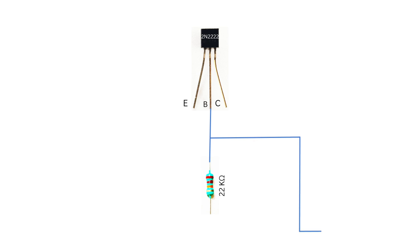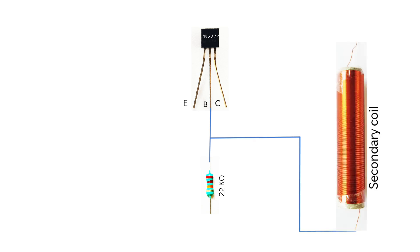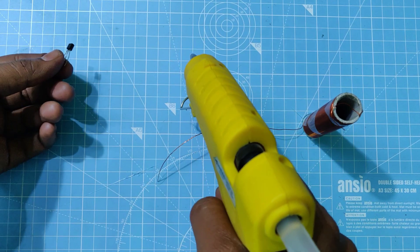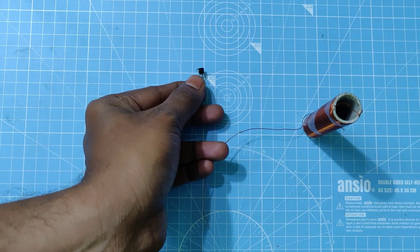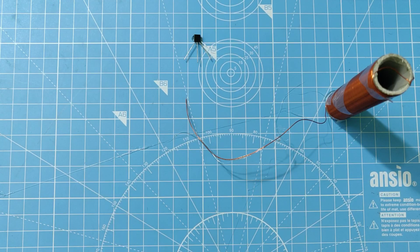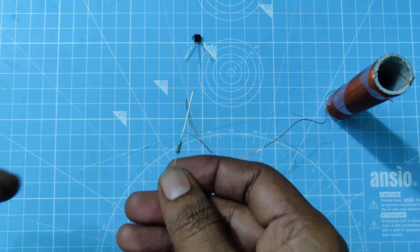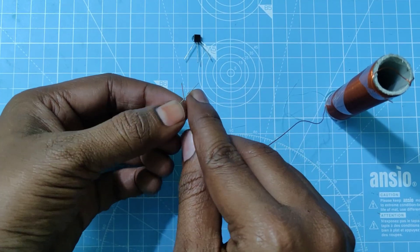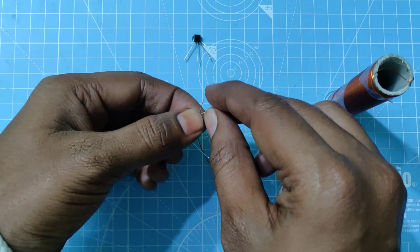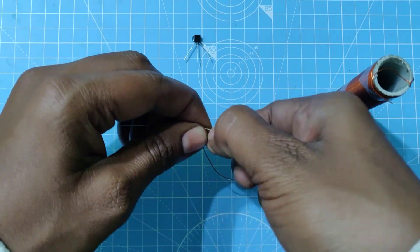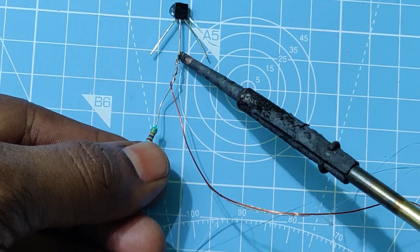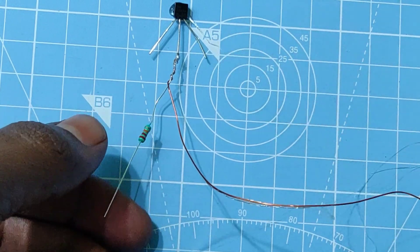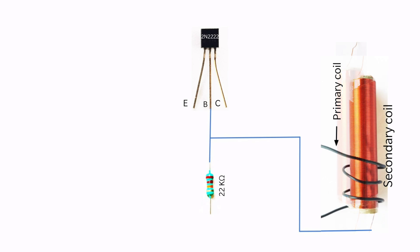Connect the 22 kilo ohm resistor and bottom end of the secondary coil to the base of the transistor. Connect the upper end of the primary coil to the collector of the transistor.